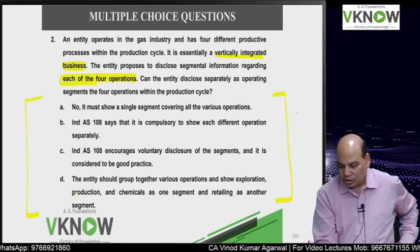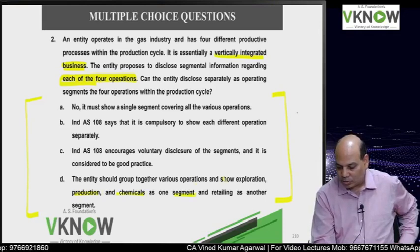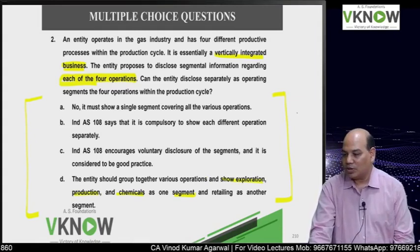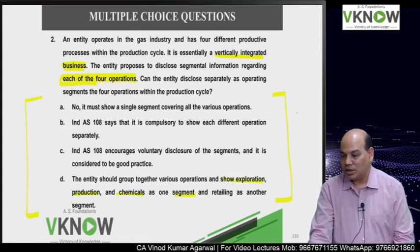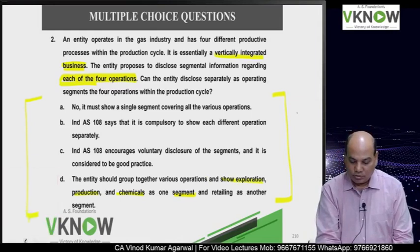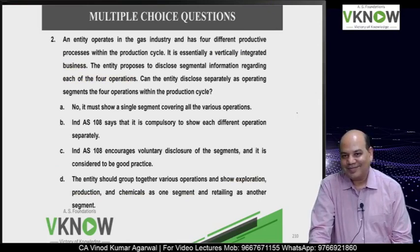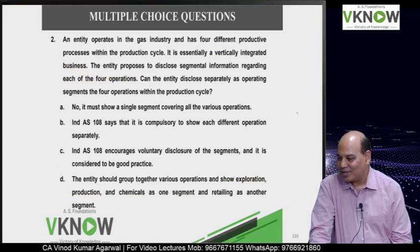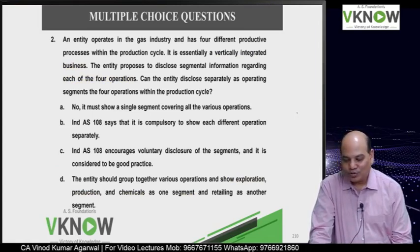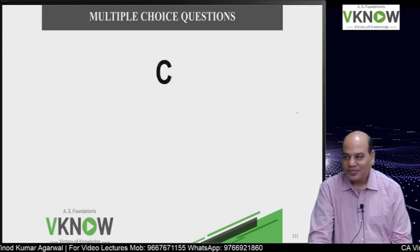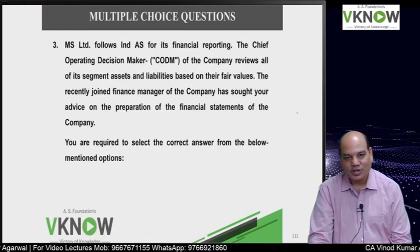The four processes in the problem are likely exploration, production, chemical, and retailing. After voting, 100% of votes go to option C - and C is the right answer. IND AS 108 encourages voluntary disclosure. If you can answer this question, you have understood this standard.